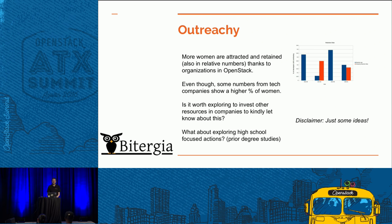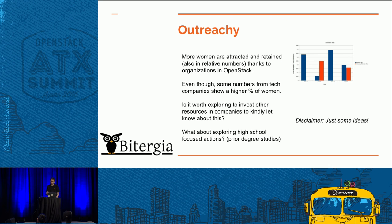Some conclusions from this analysis: big companies are doing better than the Outreachy program specifically focused on decreasing the gender gap. Even though we have big companies claiming they are around 10-20%, and we are having 11% in OpenStack, there's still room for improvement. Is it worth exploring other kinds of investment? We have Outreachy, which is great. Can we go to companies and kindly push them to have a more diverse tech group? We have the numbers and can show them. Maybe Google Summer of Code and Outreachy are focused on degree programs — what about going to high school? Those are some ideas.